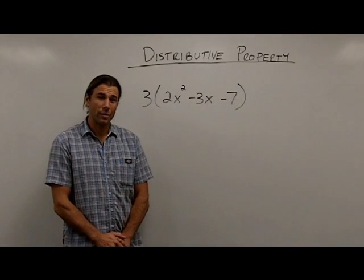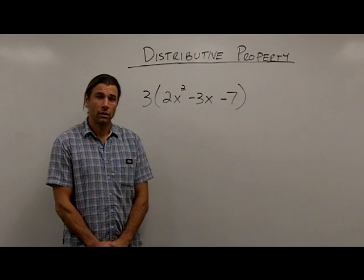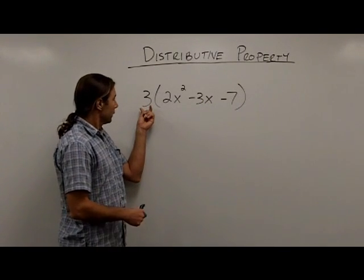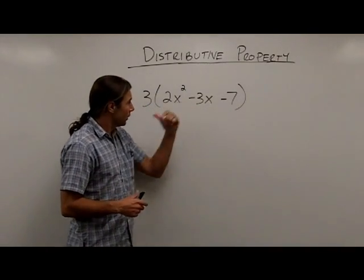Another way to simplify expressions is by using the distributive property. We use the distributive property when we're multiplying something times a group of something.